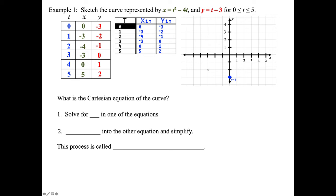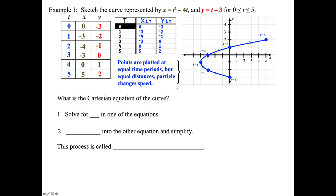At t equals 2, we're at (-4, -1). At t equals 3, we're at (-3, 0). When t equals 4, we're at (0, 1). When t equals 5, we're at (5, 2). This shows the direction our path is traveling. When we connect these points, make sure to put in arrows indicating the direction. Points are plotted at equal time periods, but equal distances and particle speeds may change.